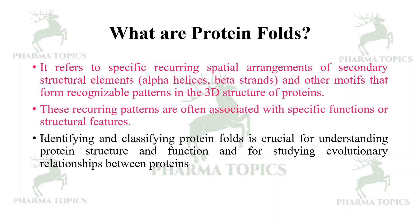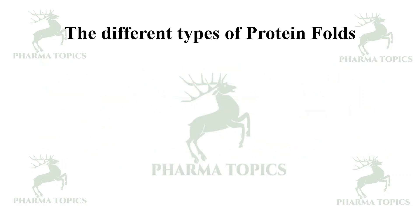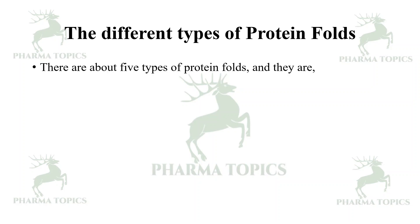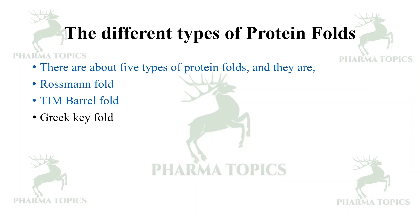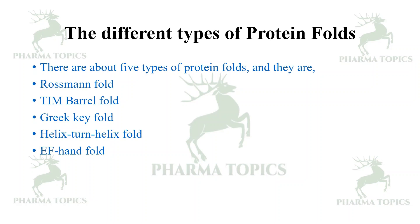Identifying and classifying protein folds is crucial for understanding protein structure and function and for studying evolutionary relationships between proteins. There are about five types of protein folds: the Rossmann fold, TIM barrel fold, Greek key fold, helix-turn-helix fold, and EF hand fold.